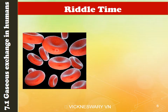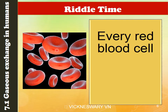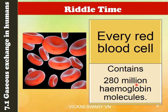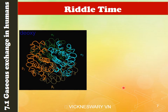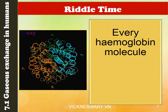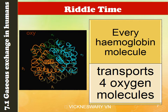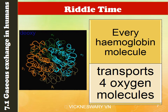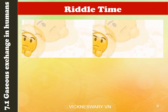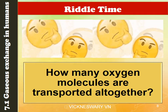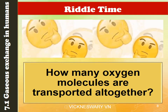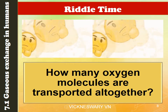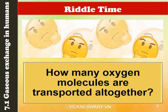If we take 1 red blood cell, we find that it will contain 280 million hemoglobin molecules. Now, those hemoglobin molecules, as you can see in the picture here, can transport up to 4 oxygen molecules. So my question to you is, how many oxygen molecules are transported altogether in our whole body? As you think of the answer to this question, let me move to the theory.